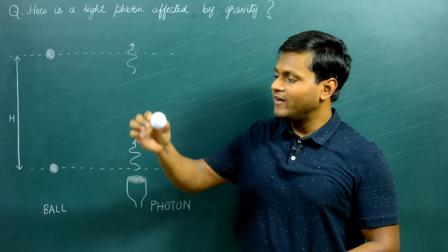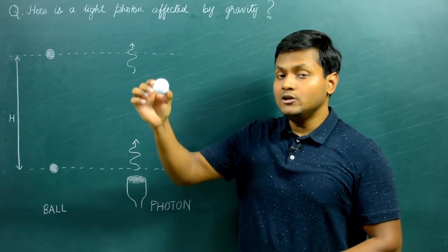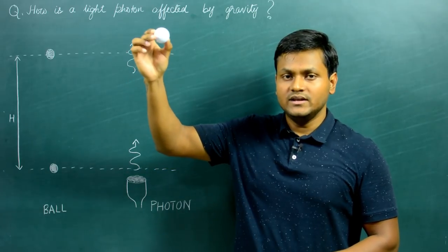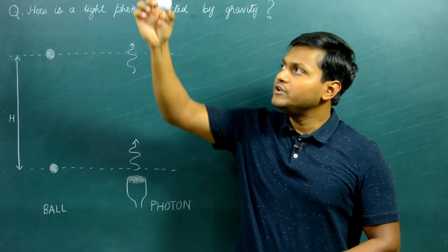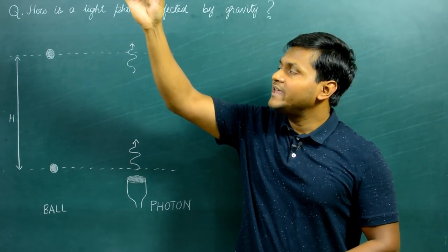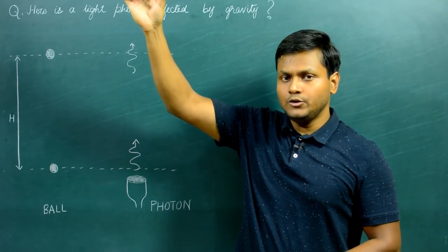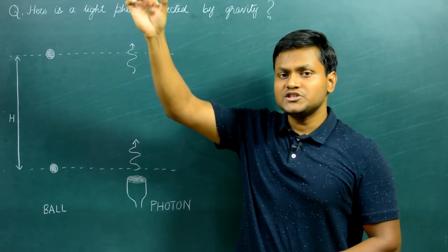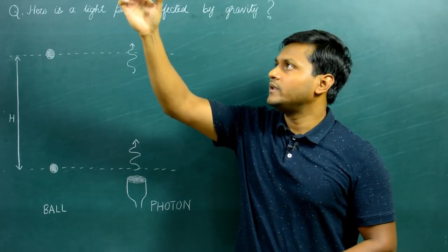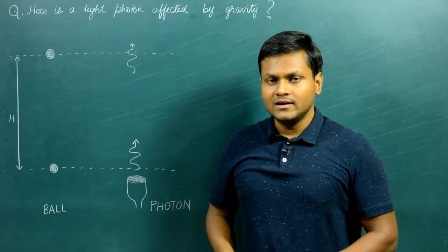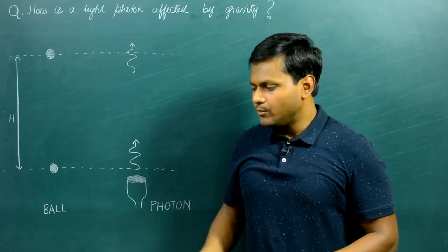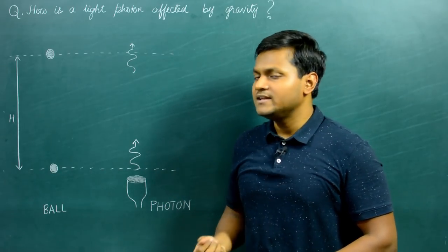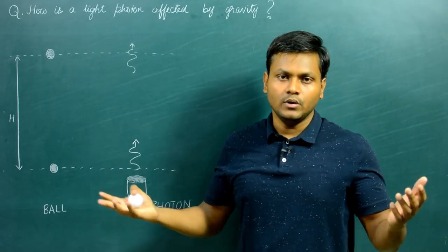As it keeps moving upwards it loses kinetic energy, its velocity decreases, and it reaches a particular point where its kinetic energy is zero, its velocity is zero, its potential energy is maximum, and then it starts falling back again. Quite simple, right? The ball goes up because of kinetic energy and then it comes back again because of the pull of the earth.